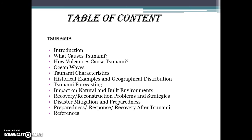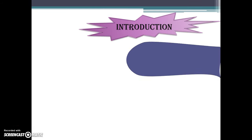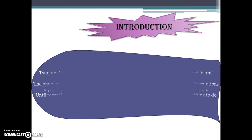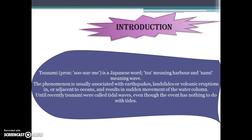The Table of Contents is a point I want to give an overview of. Introduction of the Tsunami: Tsunami is a Japanese word for wave. This phenomena is usually associated with earthquake, landslide, or volcanic activity adjusted to the ocean. The result is a sudden movement of the water column. Until recently, Tsunami was recorded as a tidal wave, even though the event has nothing to do with tides.